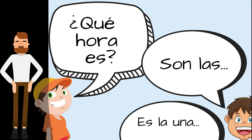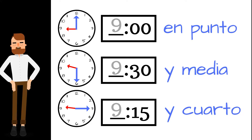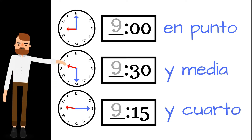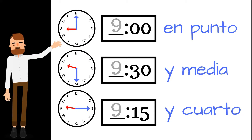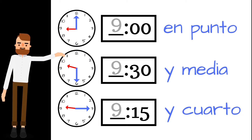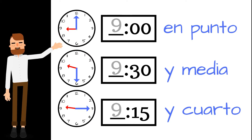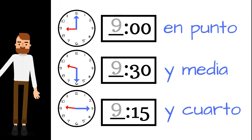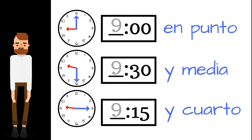Now let's see how we complete the answer. We just have to use the numbers you've been learning. For o'clock, you say: en punto. For half past, you say: y media. And for quarter past, you say: y cuarto.